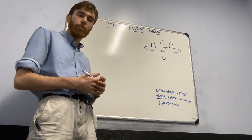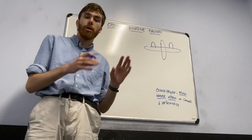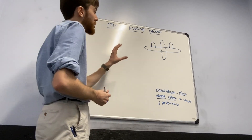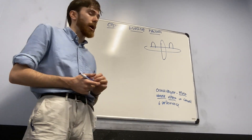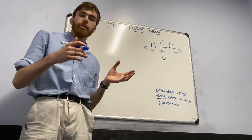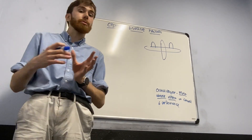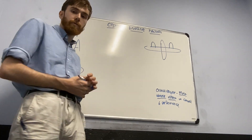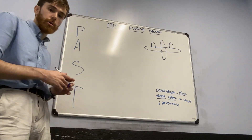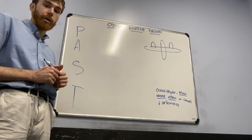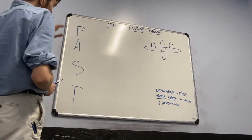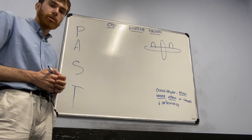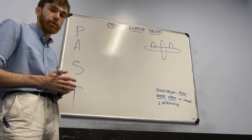That'll all make a little more sense as we get into it, but keep in mind that the critical engine concept is for conventional twins. We'll be assuming that our left engine is critical, so that means both propellers are going to be rotating clockwise when viewed from the cockpit. We'll work through each of our four factors using the acronym PAST.